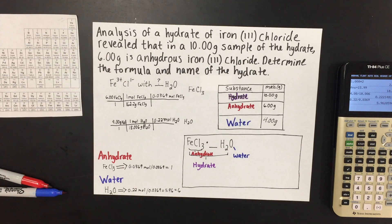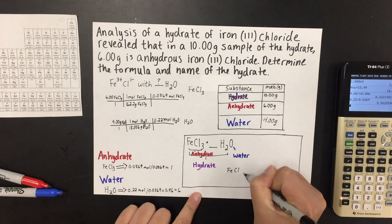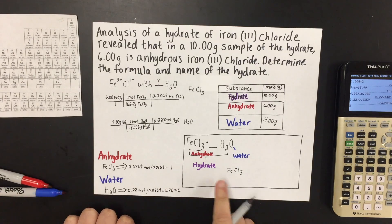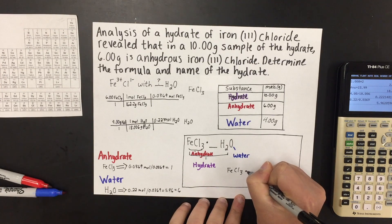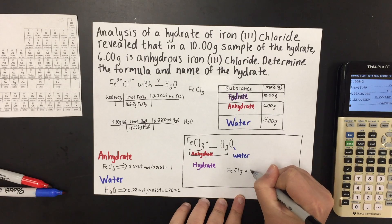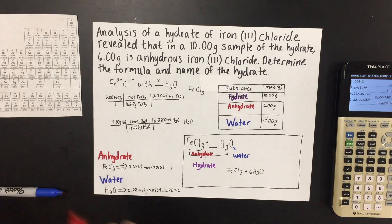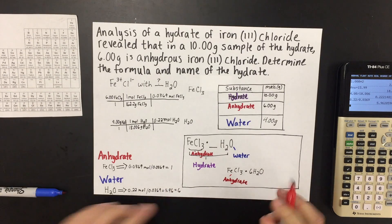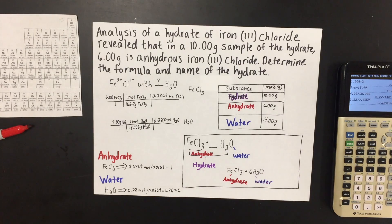So now we are ready to write our hydrate formula. We're going to start with FeCl3. Since there is only one of those present, we don't have to put a 1 in front of it. However, we have six molecules of water present, so we write FeCl3·6H2O. The parts of a hydrate include the anhydrate and the water, and together they make the hydrate. We have successfully written the hydrate formula.